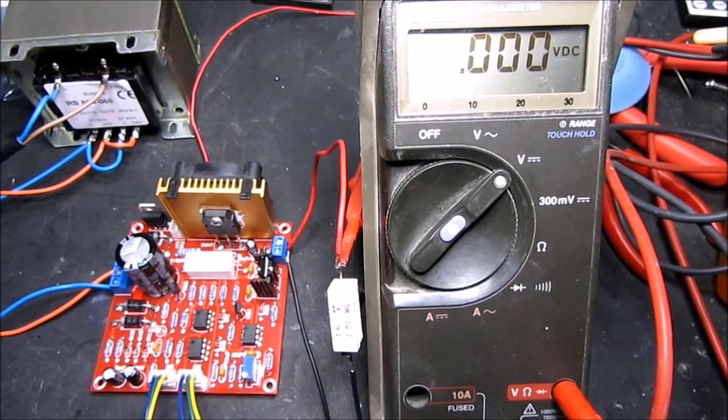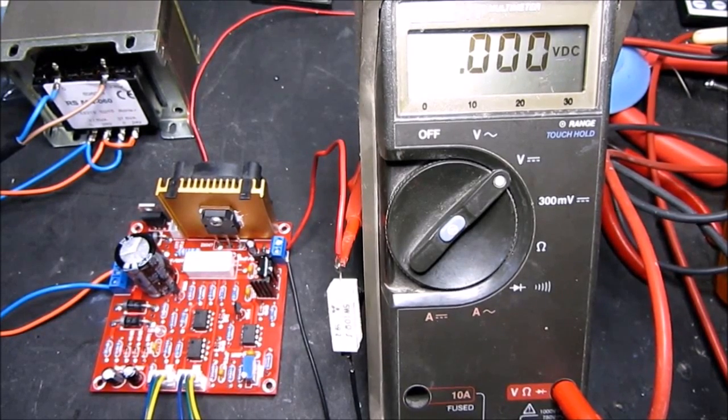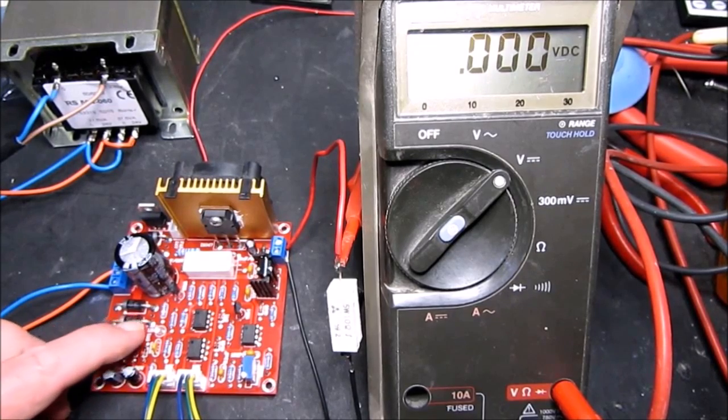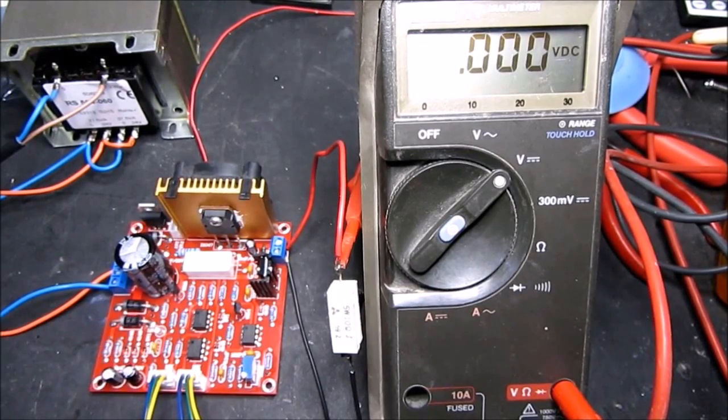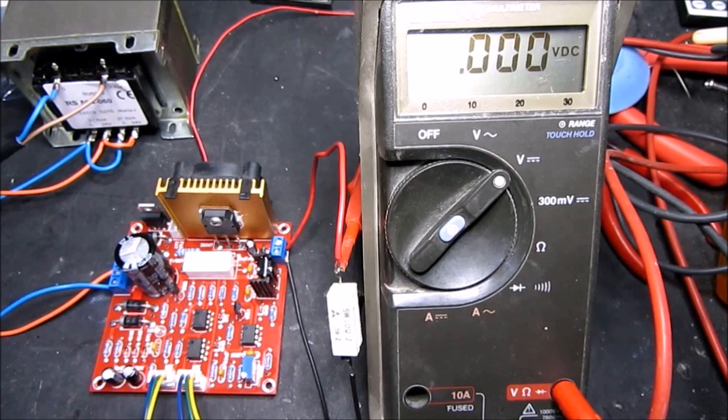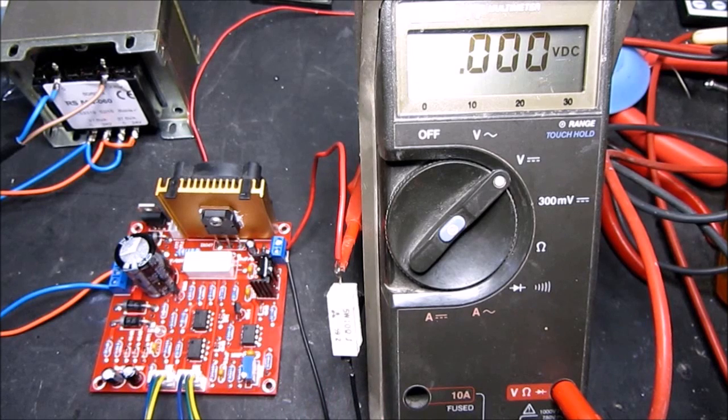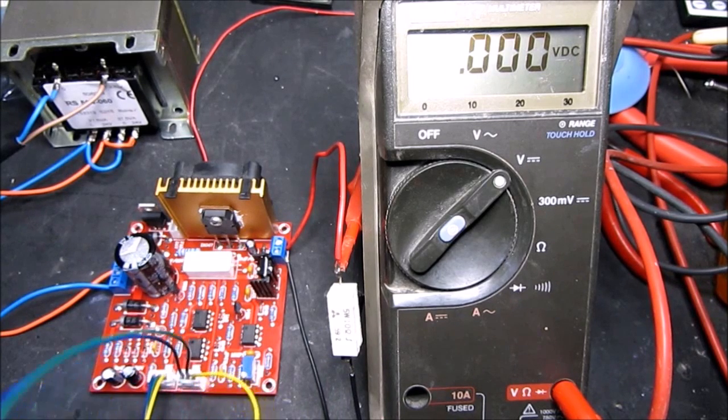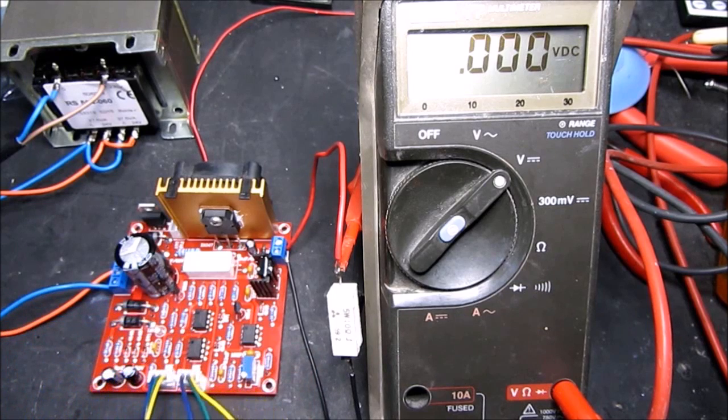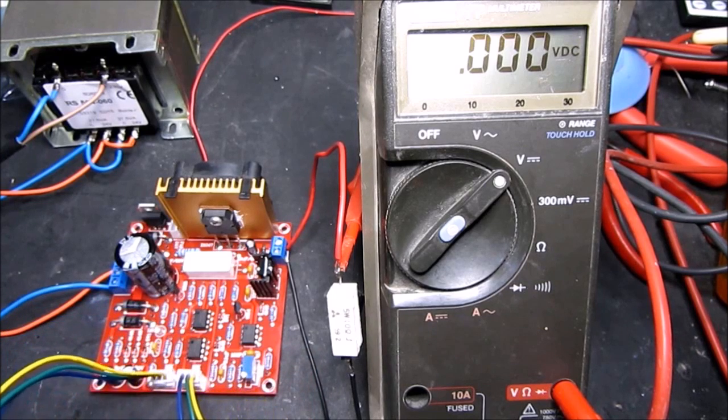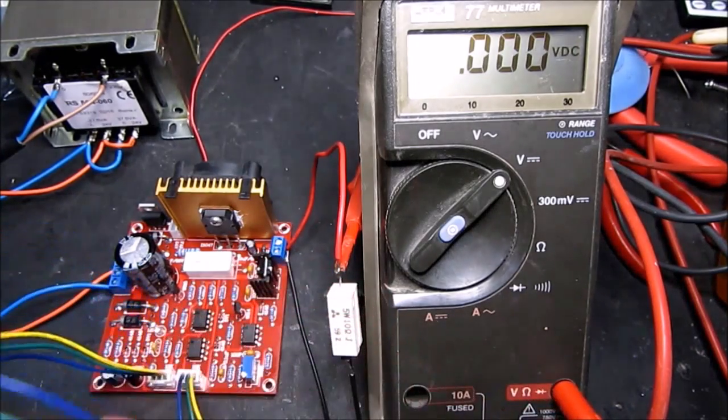The final part of the calibration is for the current limit. The current limit is indicated by the LED coming on. And to calibrate that, we need to put a 10 ohm resistor across the output, making sure that it has sufficient power capabilities. This is a 5 watt 10 ohm, because obviously we're going to be passing some current through it. And to start this test, we turn the voltage potentiometer all the way down and the current potentiometer all the way up. So that's fully clockwise.